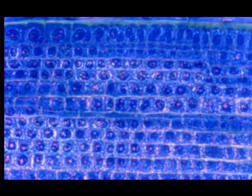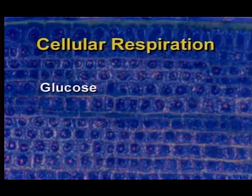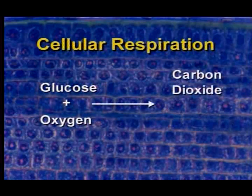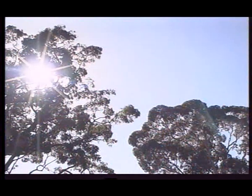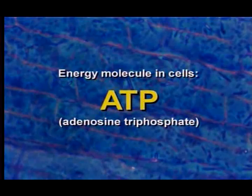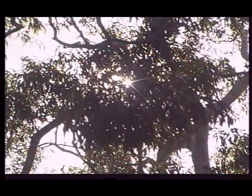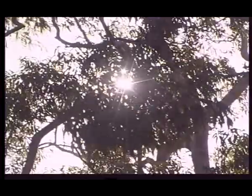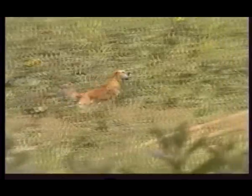In a series of processes within each cell, food molecules such as glucose combine with oxygen. This produces new molecules of carbon dioxide and water. The energy that was stored in the glucose is released by the reactions of cellular respiration. The energy is stored in a molecule called ATP. ATP is the most readily available energy source for activity. Cellular respiration takes place in both plants and animals and provides a constant supply of energy to carry out life functions.